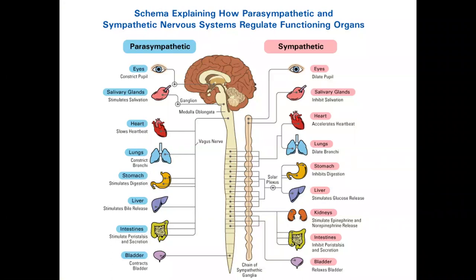In this picture you can see a scheme explaining how the parasympathetic and sympathetic nervous systems regulate organ function. The same organs have different responses depending on which part of the autonomic nervous system is activated. For example, parasympathetic innervation causes constriction of the bronchi, while sympathetic stimulation will dilate the bronchi — so they have absolutely opposite, meaning opposing, functions in the same organs.